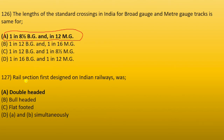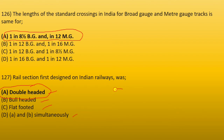Next: the rail section first designed on Indian Railway was double-headed, bull-headed, flat-footed, or ANP7. The first design of rail section was double-headed, where the cross-section is the same on both sides — these are our double-headed rails.